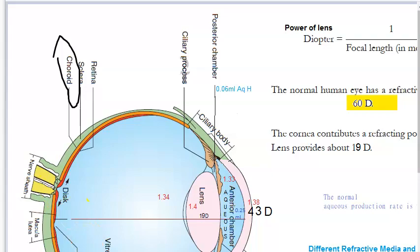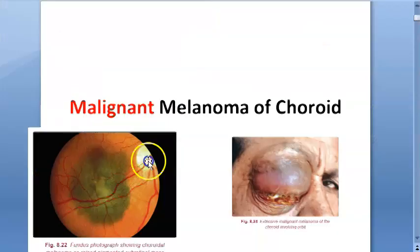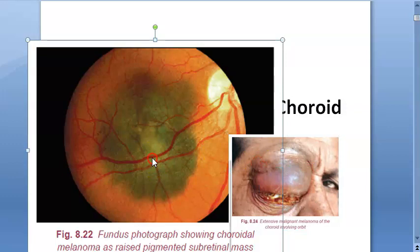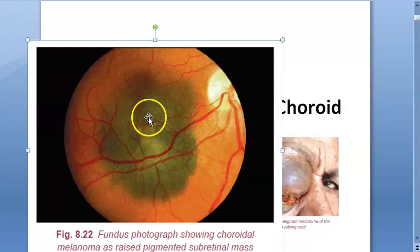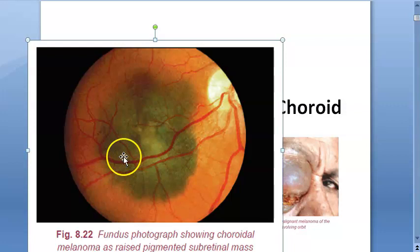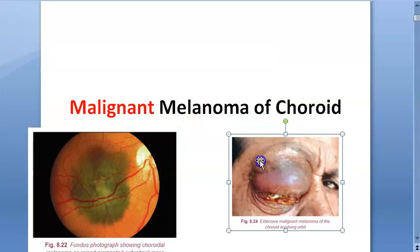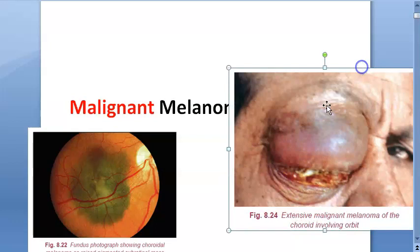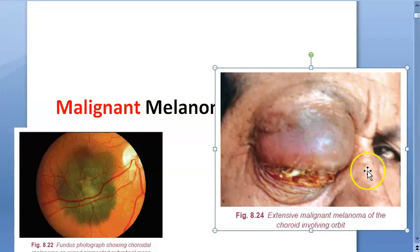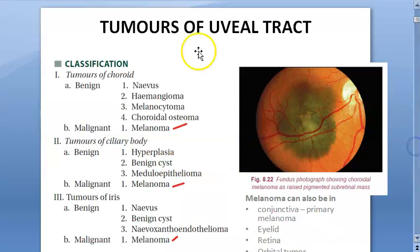Melanoma means it affects the melanocytes. This fundus picture is showing choroidal melanoma as a raised pigmented subretinal mass. Because you're looking at the retina and the choroid is below it, it appears as a subretinal mass. Another photo shows extensive malignant melanoma of the choroid now involving the orbit — it is a unilateral condition, typically around 50 years of age.